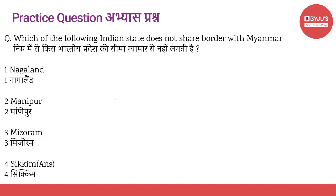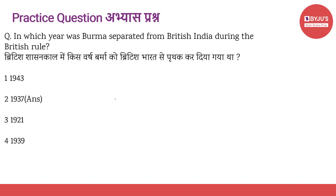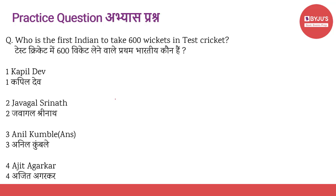Agla sawaal hai: which of the following Indian states does not share a border with Myanmar? 1. Nagaland, 2. Manipur, 3. Mizoram, and 4. Sikkim. Next question hai: in which year was Burma separated from British India during the British rule? 1. 1943, 2. 1937, 3. 1921, and 4. 1939. Next question hai: who is the first Indian to take 600 wickets in test cricket? Options hain: Kapil Dev, Javagal Srinath, Anil Kumble, ya phir Ajit.